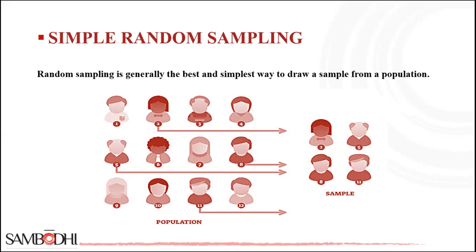This is one of the best probability sampling techniques that helps save time and resources. In this simple random sampling method, it is a reliable method of obtaining information where every single member of a population is chosen randomly, merely by chance. Each individual has the same probability of being chosen to be a part of a sample.